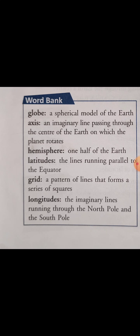Hemisphere — when the equator divides the earth into two halves, each half is called a hemisphere. Latitudes — these are lines running parallel to the equator. Grid — a crisscross pattern; the definition you will write is: a pattern of lines that forms a series of squares.